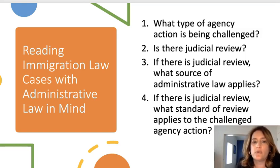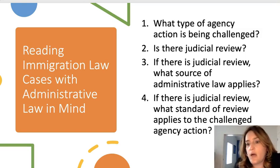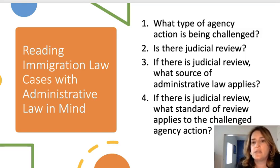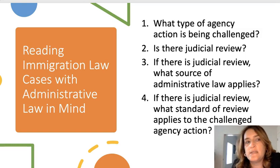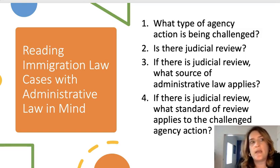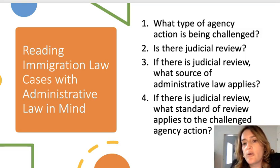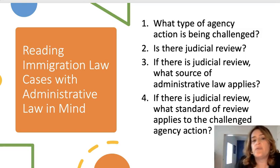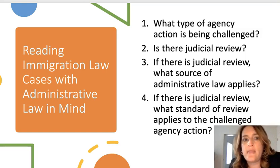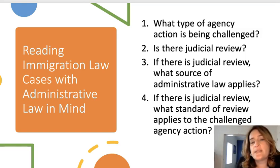The source matters because depending on the type of agency action being challenged, it determines what the standard of review is — the lens the court will use to review the agency action and how much deference the court will show to the agency. For example, if an agency made a conclusion of law — say, if you're arguing that the agency misinterpreted a statute — that will get a different standard of review than if you're arguing the agency made a mistake of fact, or that the agency failed to follow a procedural obligation or failed to think about a problem in the way the APA demands. I hope this is a helpful introduction. Good luck in your study of immigration law.